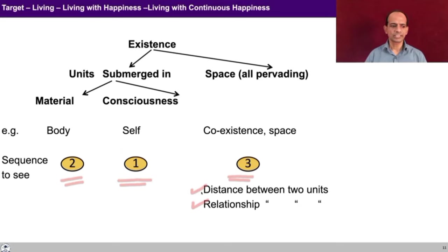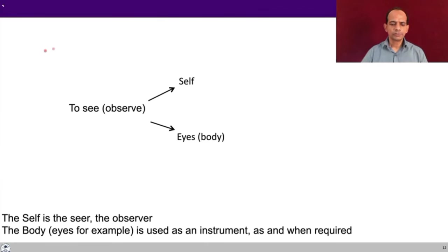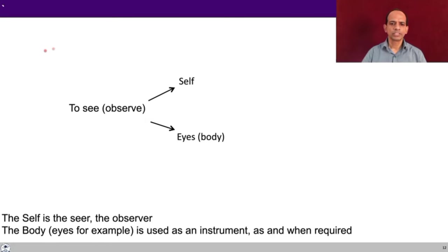To see, to observe — who observes? Who sees? We have eyes in the body. But the eyes are a part of the body and eyes are material. The seeing, which is a conscious activity, cannot be done by the eyes — eyes only serve as an instrument. So who is the seer? The self is the seer. The self observes reality; the eyes only work as an instrument for the self. The self is the seer, the observer; the body — the eyes, for example — is used as an instrument as and when required.